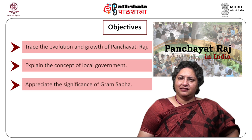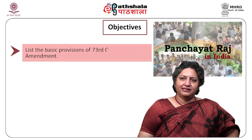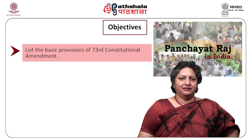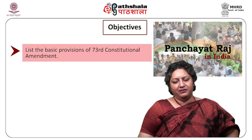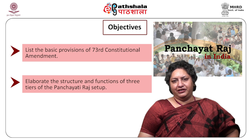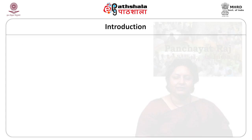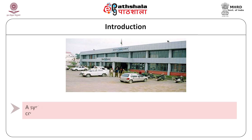Further objectives are to appreciate the significance of the village level parliament, which is also known as the Gram Sabha, to list the basic features of the 73rd Constitutional Amendment Act, and to elaborate upon the three tiers of the Panchayati Raj Administration.